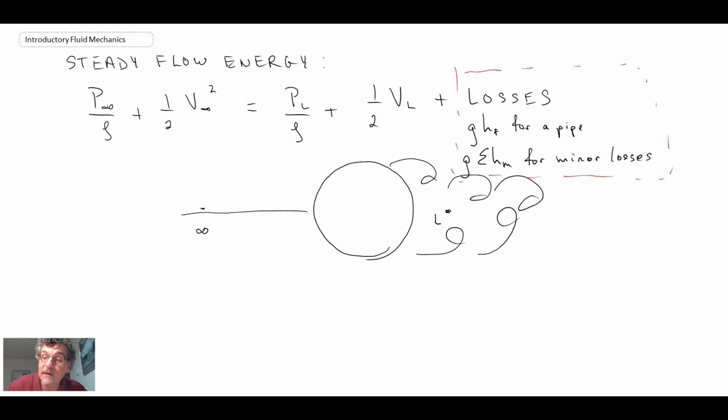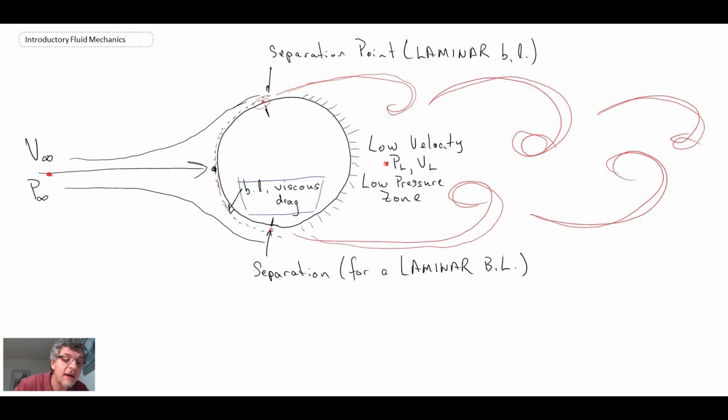That is flow over a cylinder and some of the drag characteristics. We'll spend a little bit more time in the next segment looking in more detail at the drag characteristics and what they might look like. Then we'll move on and look at lift on external flow.